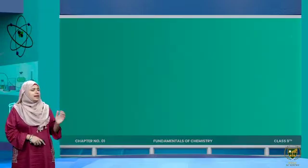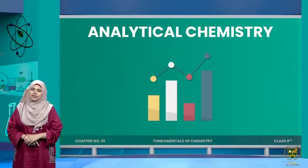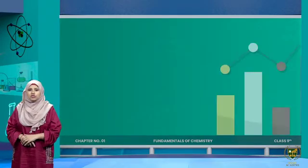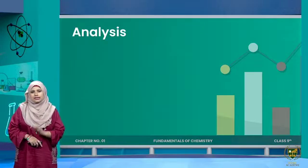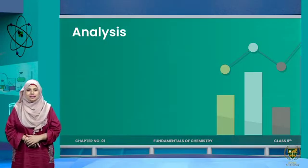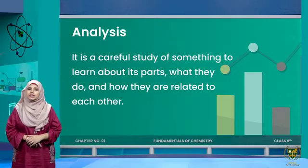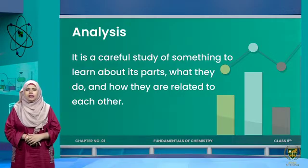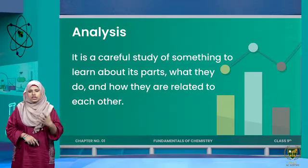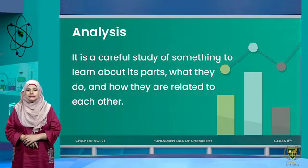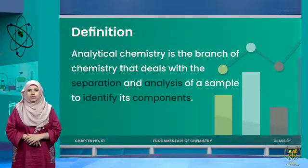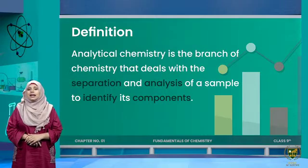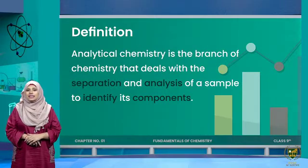Now let's move on to the last branch, which is analytical chemistry. The word 'analytical' is derived from the word 'analysis.' Analysis means the careful study of something to learn about its parts. In analytical chemistry, the definition is: it is the branch of chemistry that deals with the separation and analysis of a sample to identify its components.